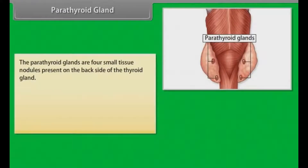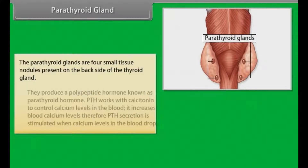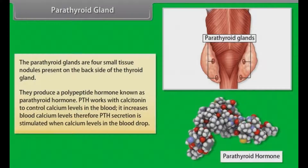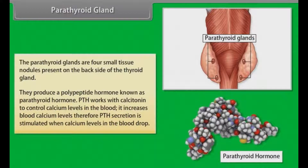The parathyroid glands are four small tissue nodules present on the back side of the thyroid gland. They produce a polypeptide hormone known as parathyroid hormone (PTH). PTH works with calcitonin to control calcium levels in the blood — it increases blood calcium levels. Therefore, PTH secretion is stimulated when calcium levels in the blood drop.